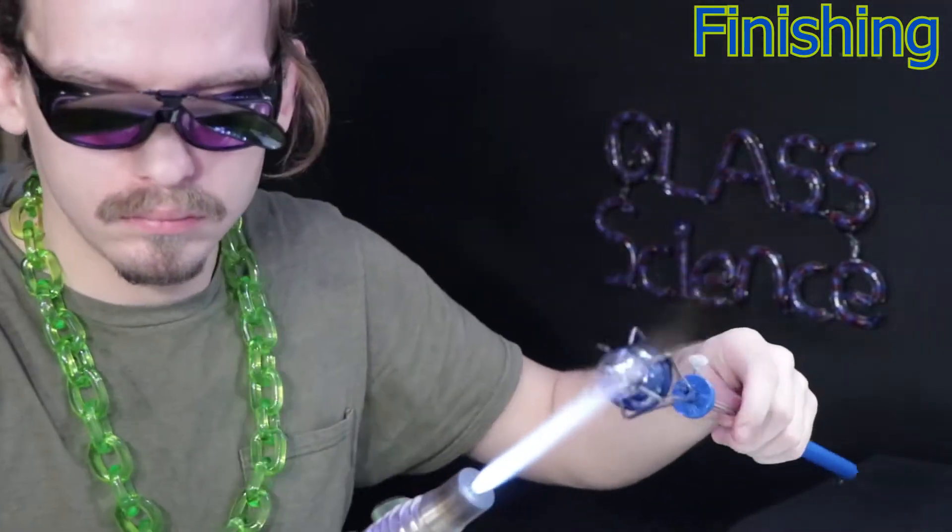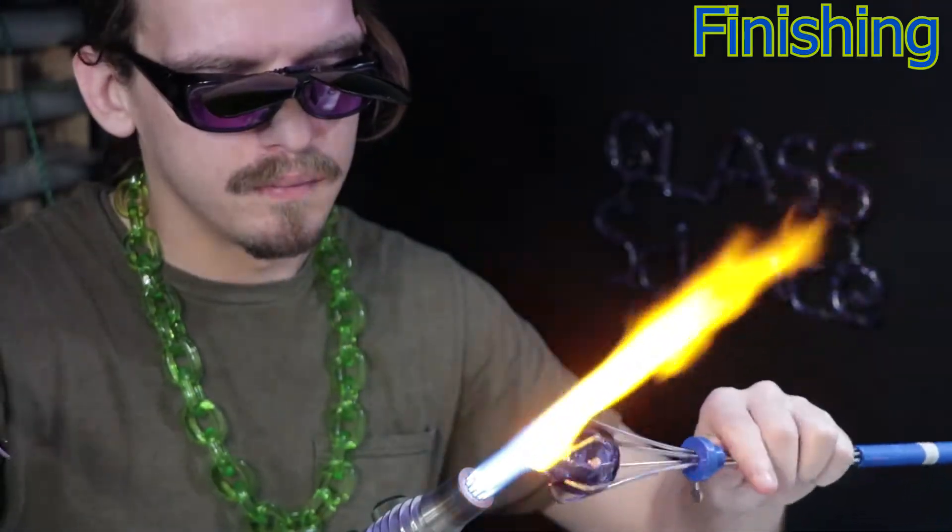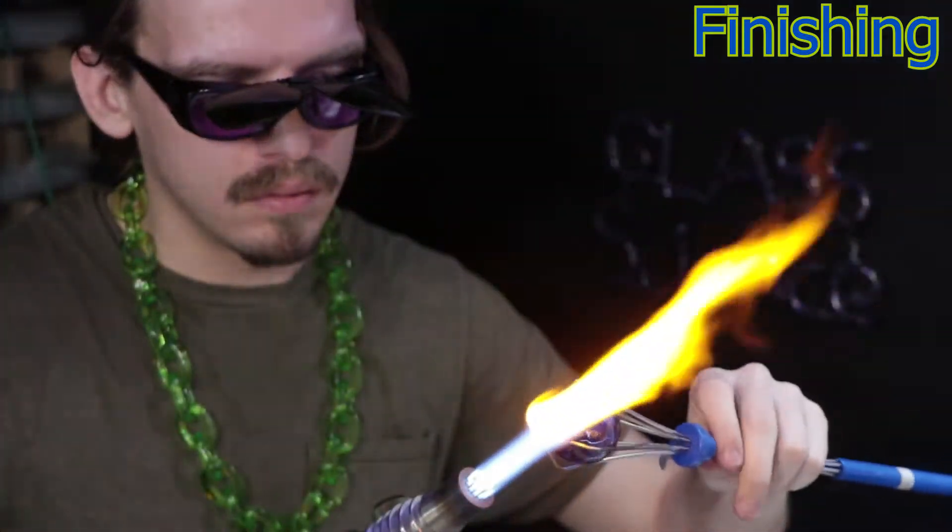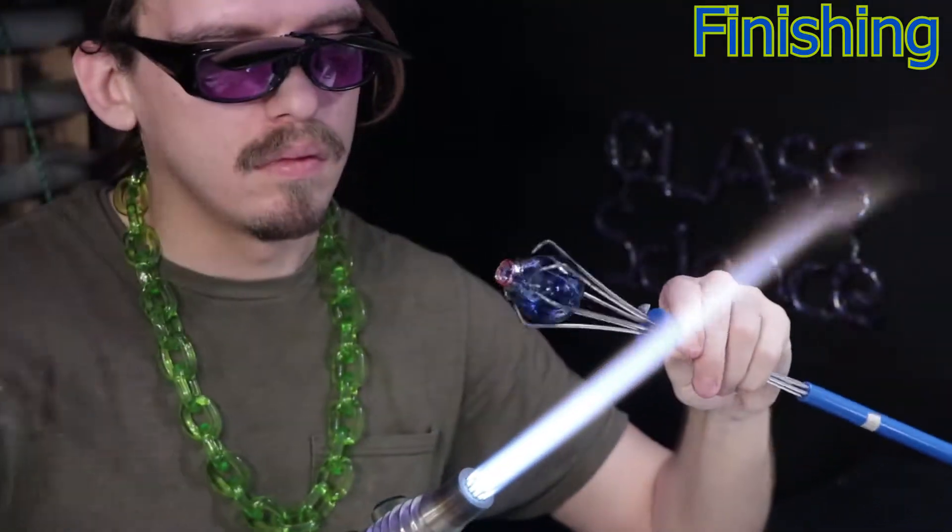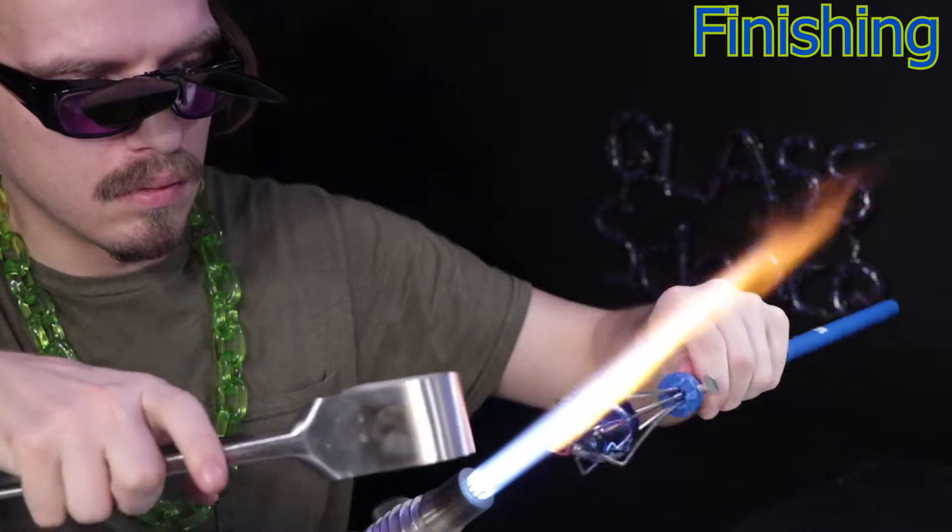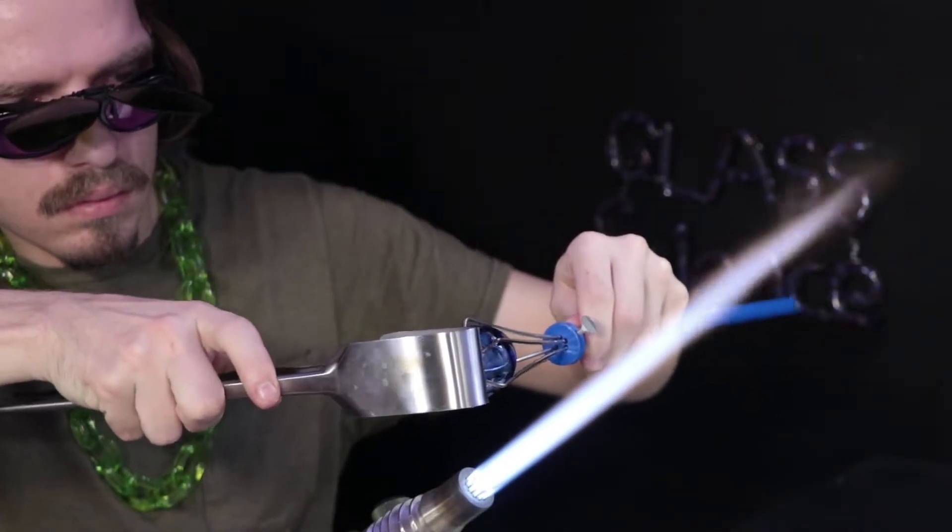And sometimes when I'm working on a project, I will change the overall plan of what it will be depending on how it's turning out midway. So for example, if I have a marble that might have a kind of a bad side, I might just flatten that side out and turn it into a paperweight.